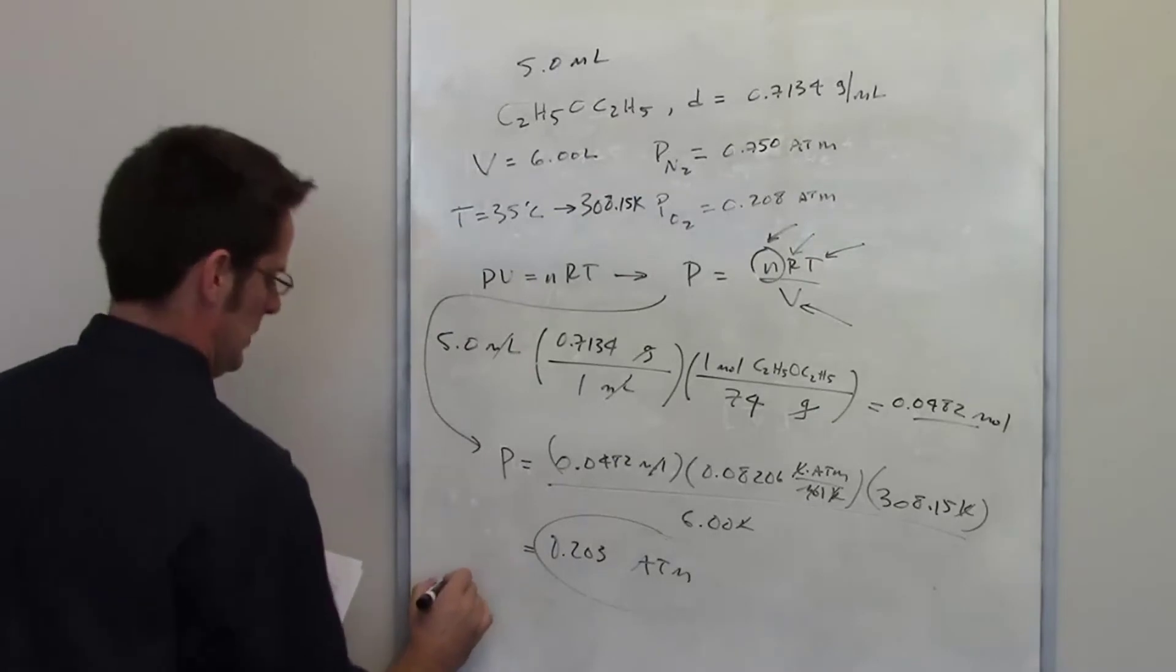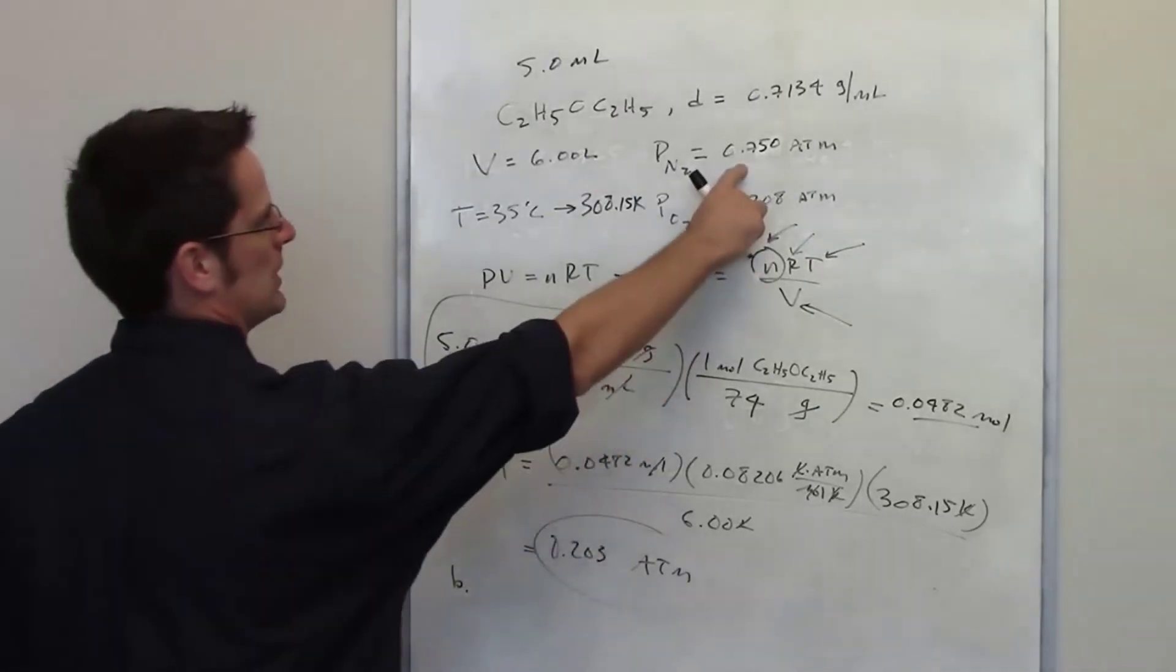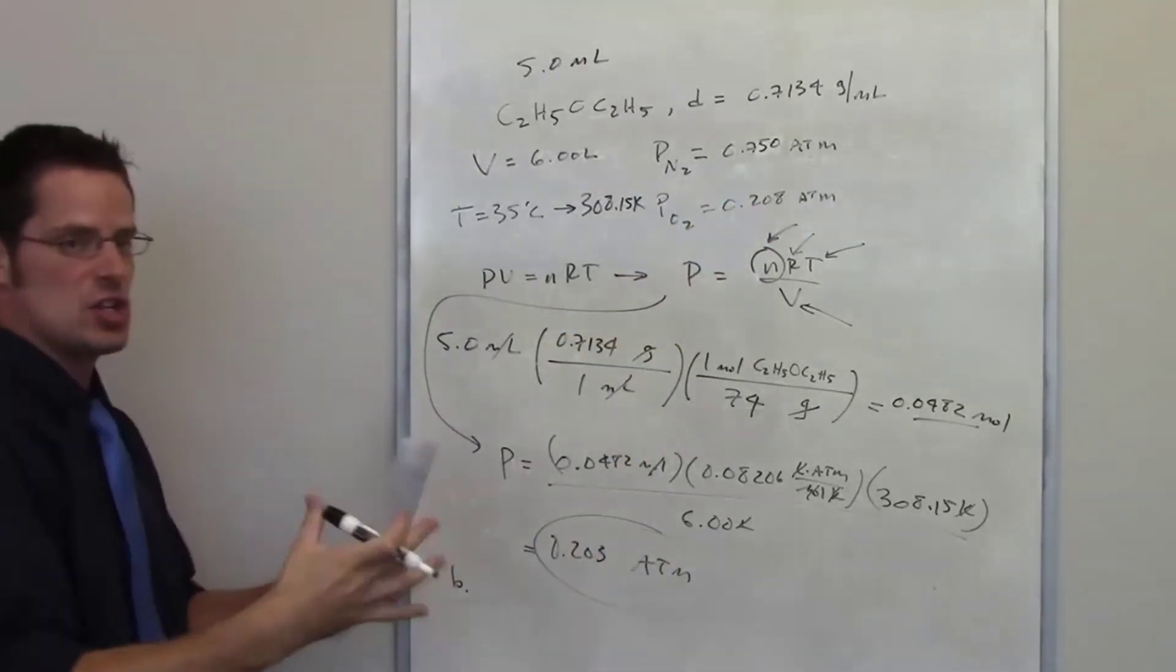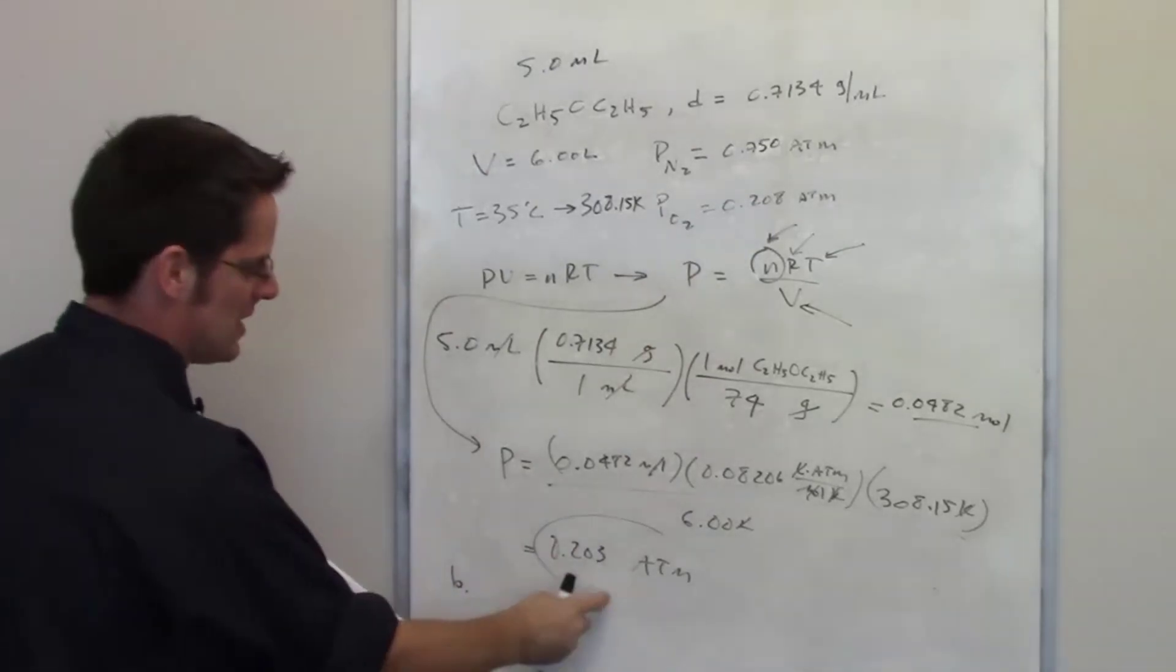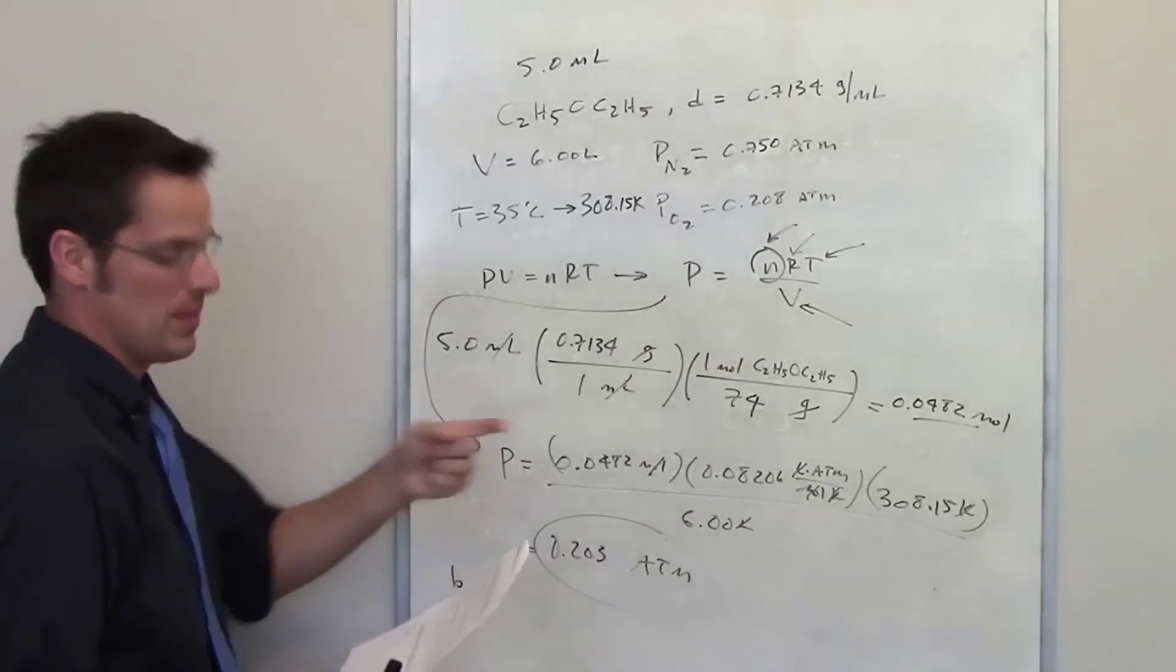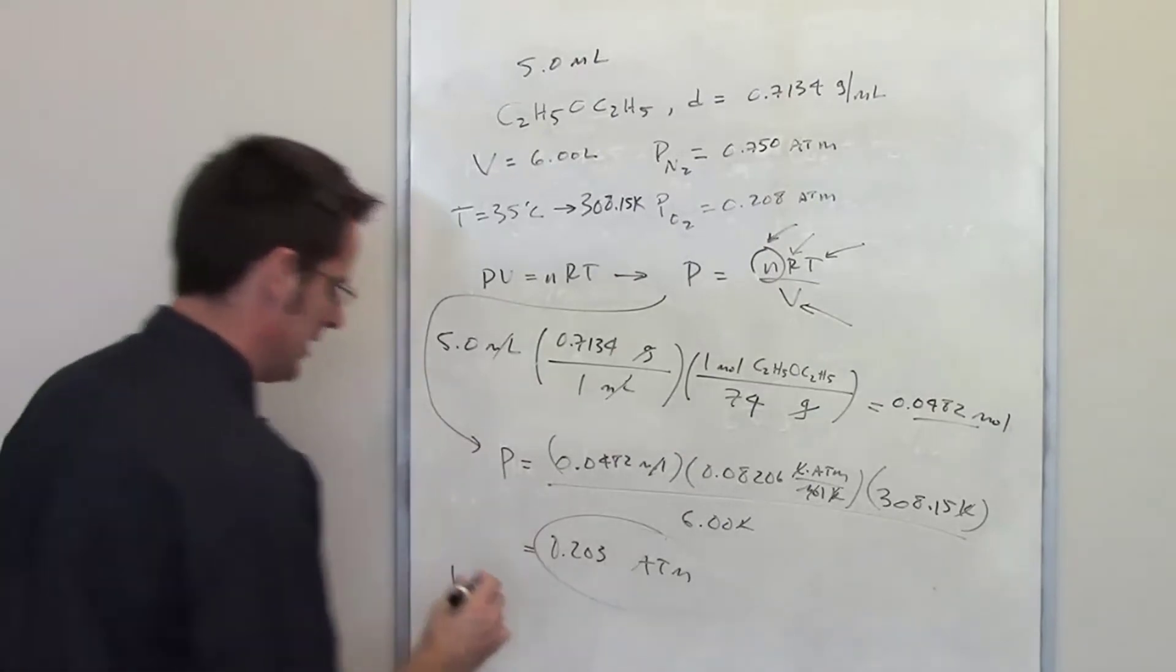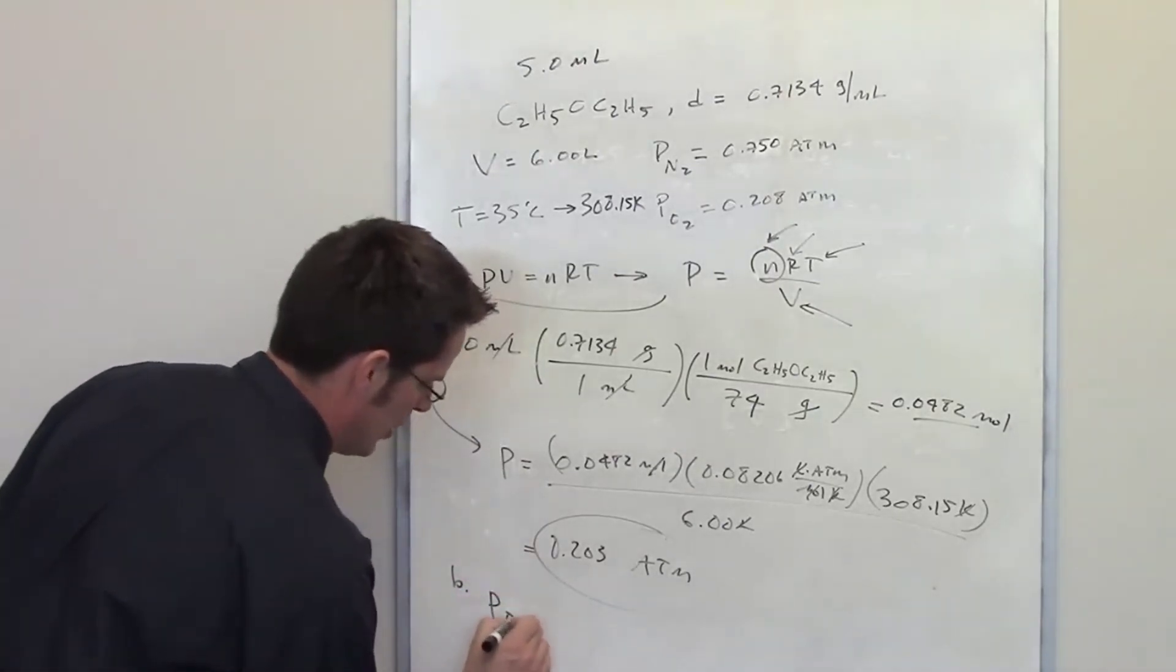In part B of this question it tells us the partial pressures of nitrogen oxygen in the chamber already. We've now added to that 0.203 atmospheres of pressure from the diethyl ether. It asks us to calculate the total pressure in the whole system.